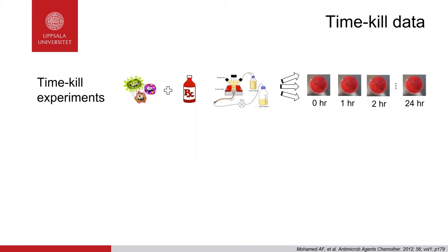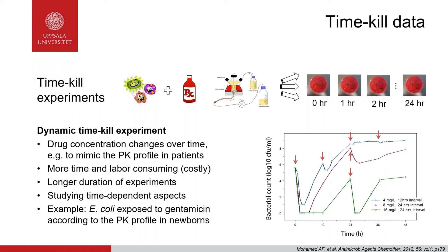To study time-related aspects, we can use a dynamic system where a pump applies a flow of fresh media through the culture vessel. The drug concentration typically changes over time, and we can set the flow rate to mimic the PK profile in patients. These systems are more time- and labor-consuming and therefore costly, but since the media is refreshed, longer experiments are possible. One example uses the dynamic setup to study growth and killing of E. coli exposed to gentamicin according to the PK profile in newborns — the data clearly shows that the second dose is much less effective than the first, allowing quantification of adaptive resistance.